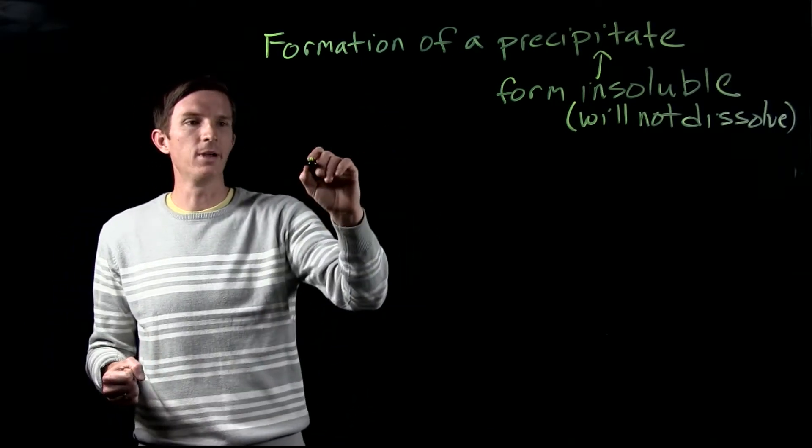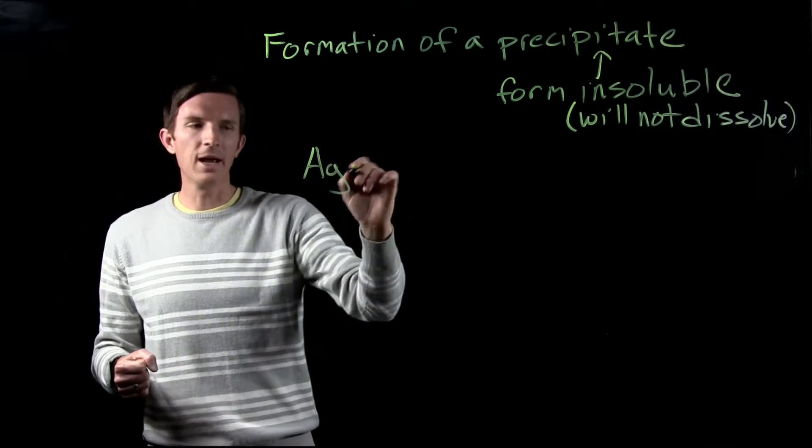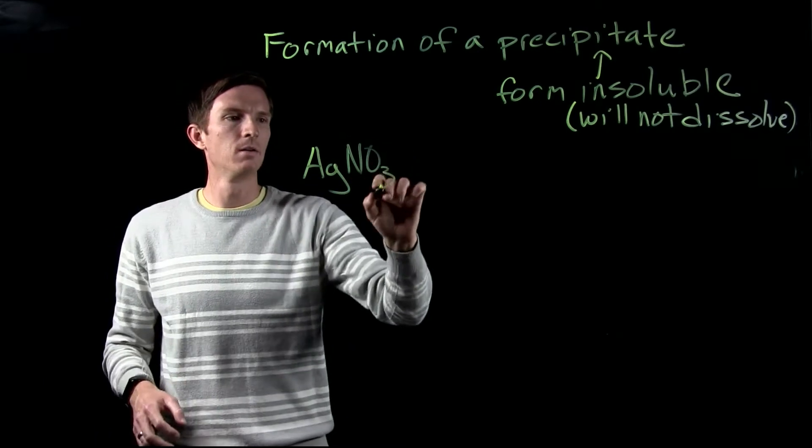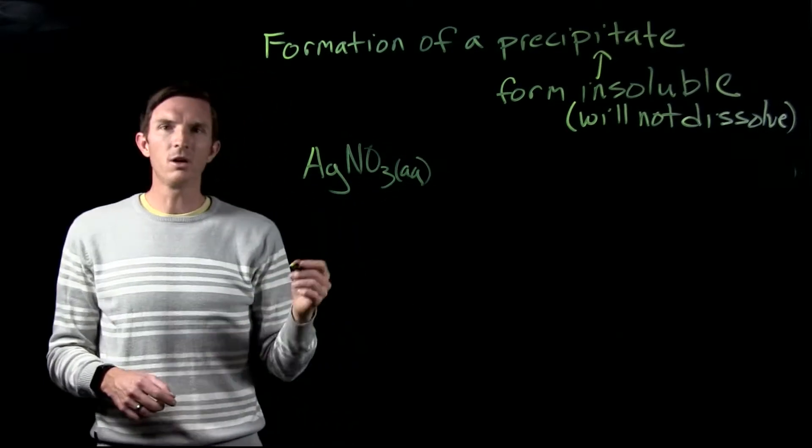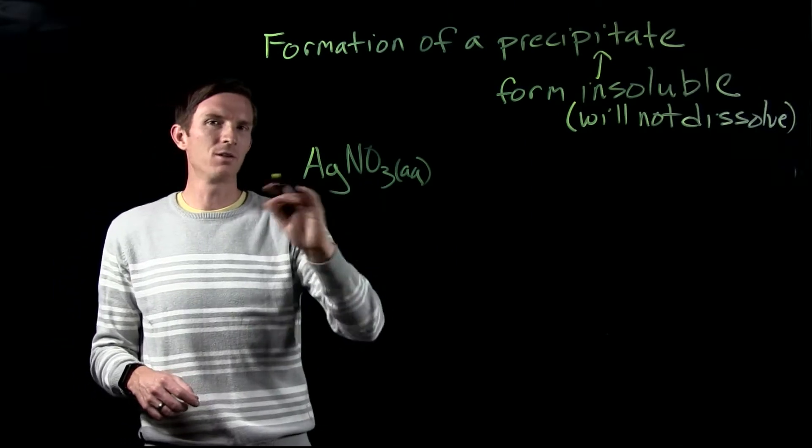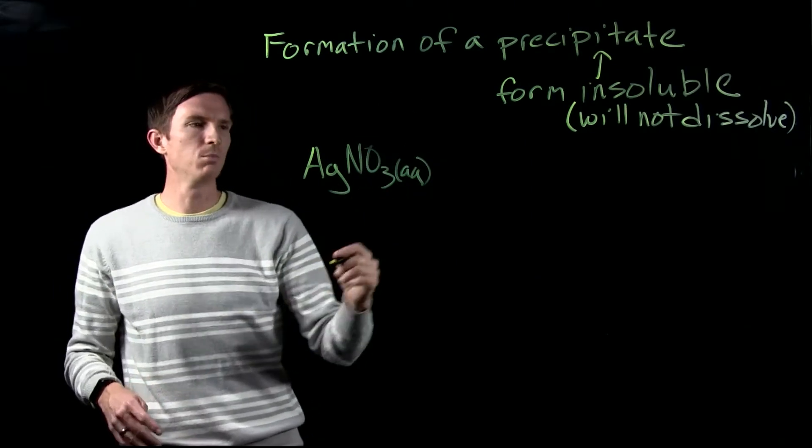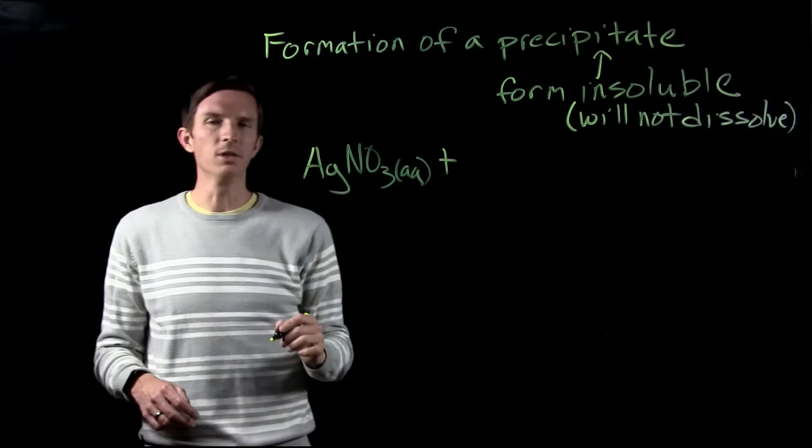So let's look at an example reaction. Let's say we have silver nitrate. And we would see based on our solubility rules that nitrate ions are always soluble, so our silver nitrate would be soluble, so we would record it as aqueous.